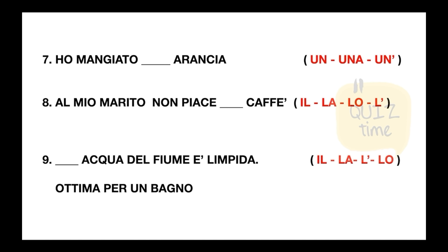L'acqua del fiume è limpida. Choose the correct article for acqua: il, la, l'apostrofo, or lo.